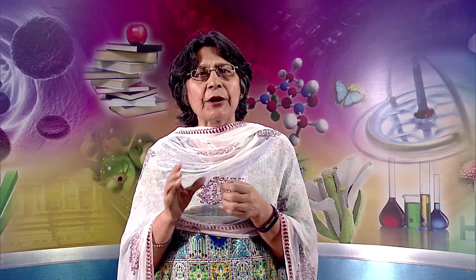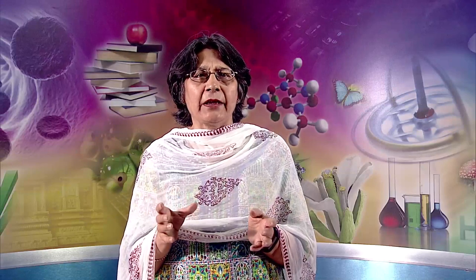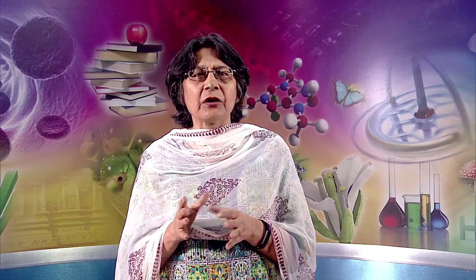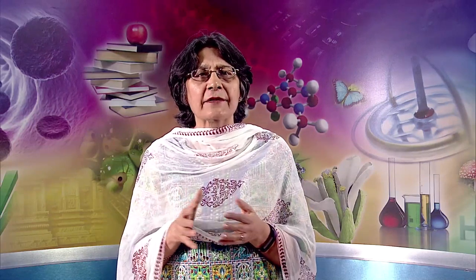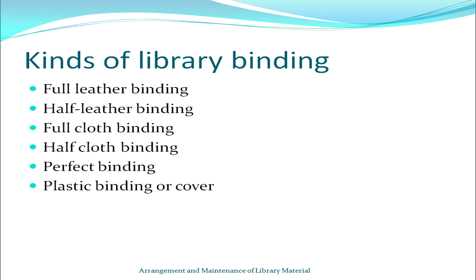The bound volume should stay open when resting face up on a flat surface so the reader has both hands free. The eight processes involved in binding include: collation, sewing, attaching covers, adding end papers to both the beginning and end of the document, coloring edges, headbands, hollow backs, and finishing. Kinds of binding for library books include full leather binding, half leather binding, full cloth binding, half cloth binding, perfect binding, and plastic binding or cover. For reference books, best quality binding should be used.